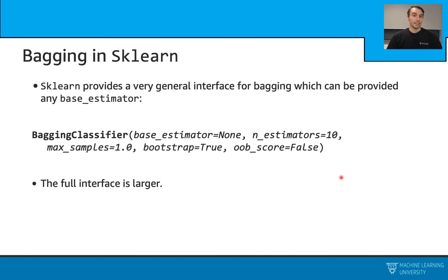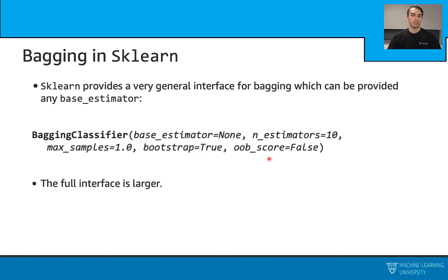Bagging has a nice scikit-learn interface. We can easily import the BaggingClassifier function and use it in our coding examples. It accepts a base estimator — for example, a decision tree. We also have the number of estimators parameter, the max_samples parameter which decides the size of our bootstrap samples (either a count or a fraction), a bootstrap parameter which can be true or false, and an out-of-bag scoring parameter which we can enable or skip. The full interface is larger than this.